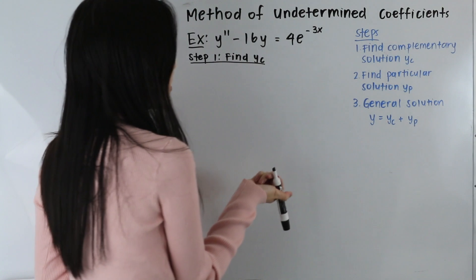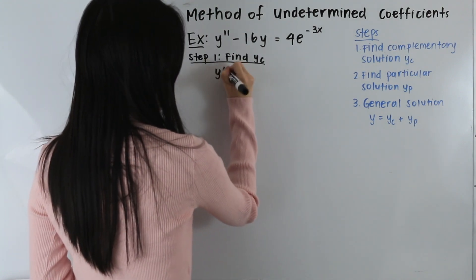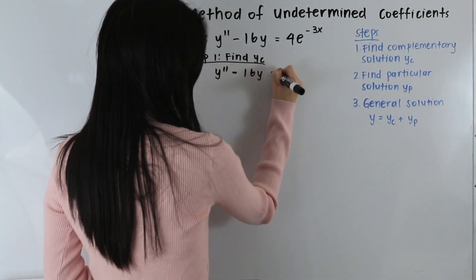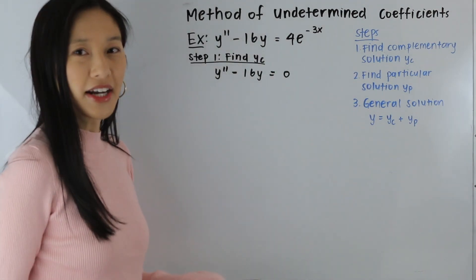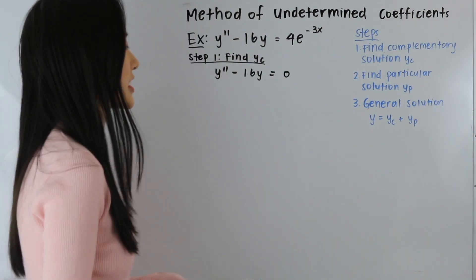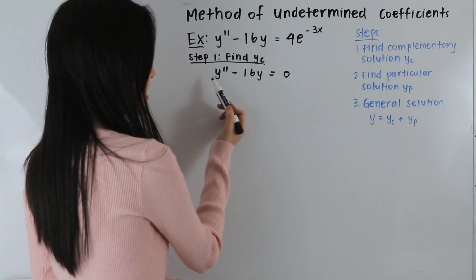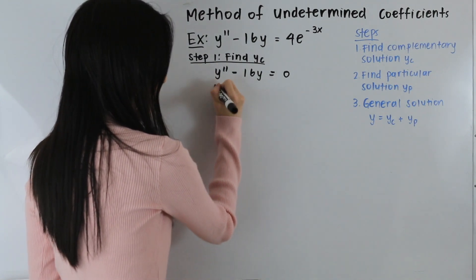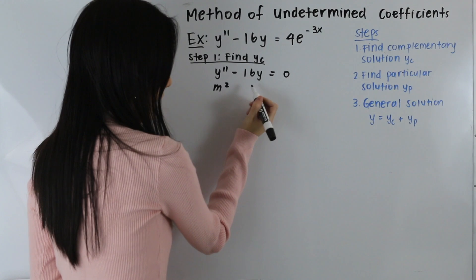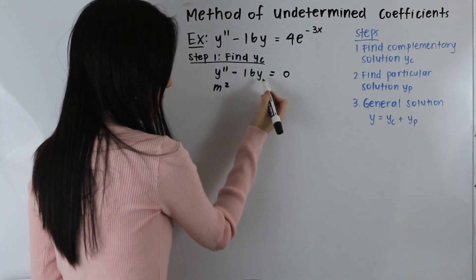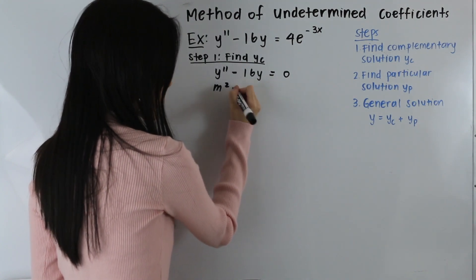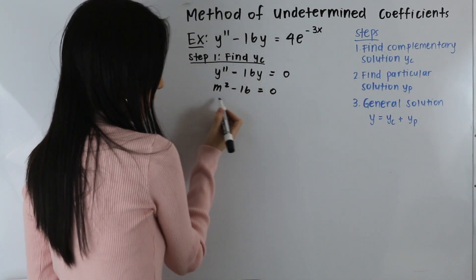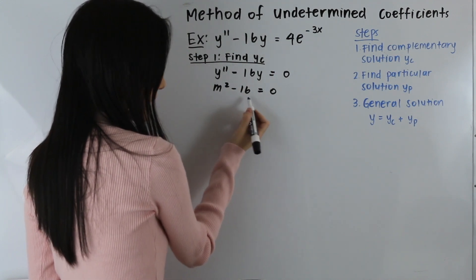So our homogeneous differential equation is y double prime minus 16y is equal to 0. Our next step is we need to write our auxiliary equation. We replace y double prime with m squared, and when we have our constant term times y, we just write our constant term. So we end up with m squared minus 16 is equal to 0.